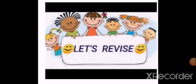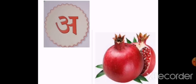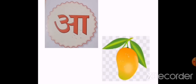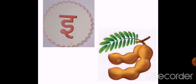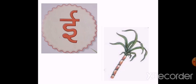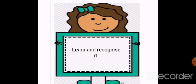Now let's revise it again. A (अ) से अनार — मीठे और सच्चे. A (आ) से आम है फलों का राजा. इ (E) से इमली.